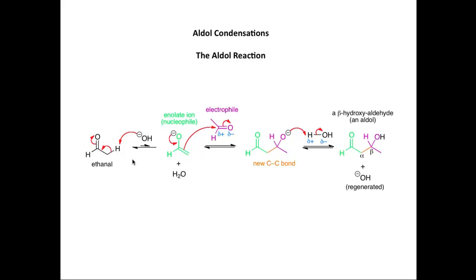Initially, we get deprotonation of one molecule of ethanol using hydroxide ion as base. The hydroxide ion deprotonates an alpha hydrogen atom, pushing the electron density onto the oxygen, and we form an enolate ion. This enolate ion is a nucleophile, so it can react with a molecule of ethanol that has not been deprotonated. Here we get a classic nucleophilic addition where the electrons attack the carbonyl group, pushing the electron density onto the electronegative oxygen. This is the new carbon-carbon bond formed in this alkoxide ion.